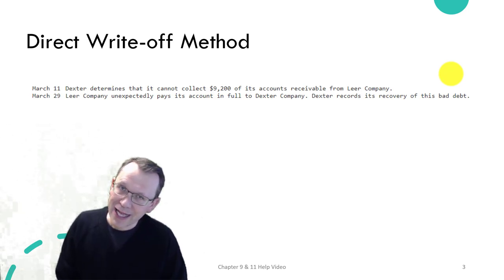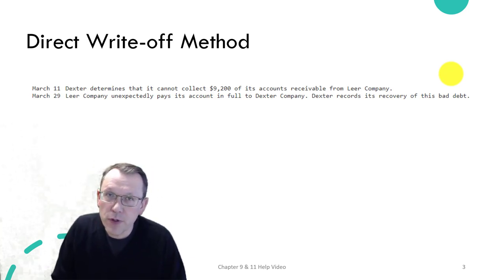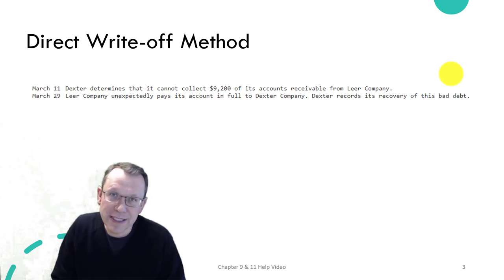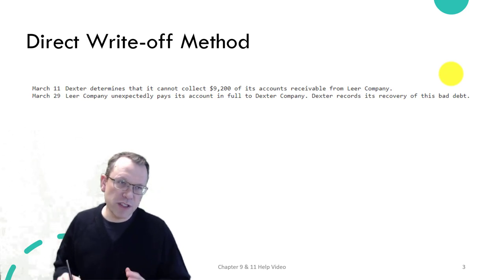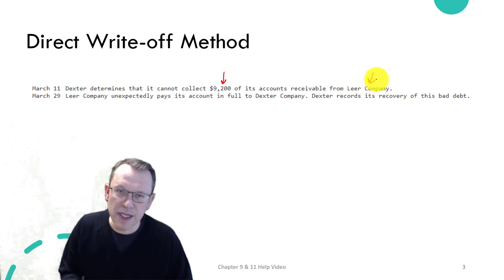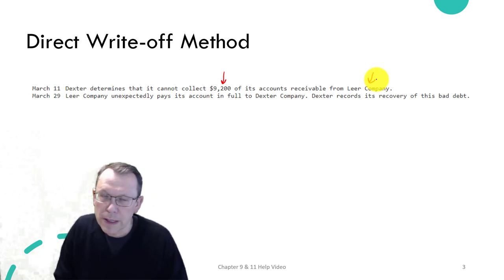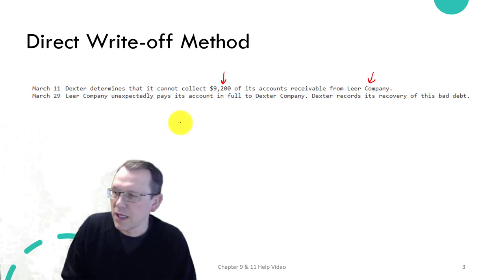The direct write-off method is not GAAP approved, although many bookkeepers and businesses use it because it's easier. We'll show the GAAP method later. For this first example: Dexter determines it can't collect from a certain company. That company has a receivable balance we're not going to collect, so we need to handle it.